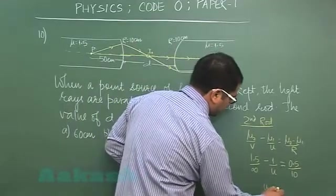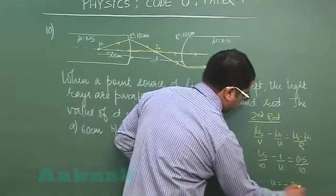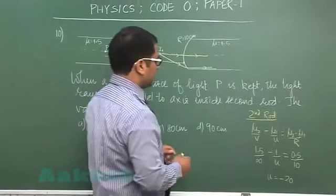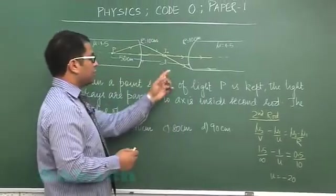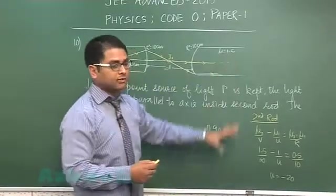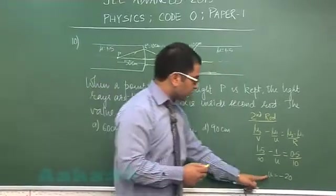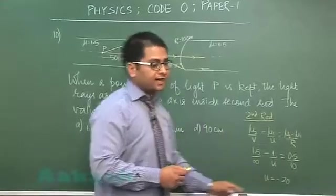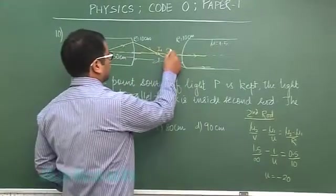You would get u as minus of 20. So we had guessed the location of i1 that it has to be in this side, and it has to be in this side. It cannot be in this side for the given condition and mathematics is also agreeing with our fact and this distance is 20.